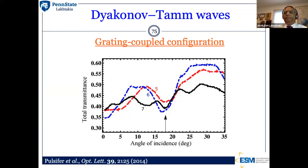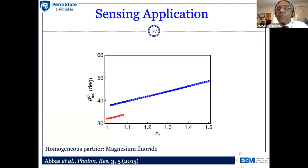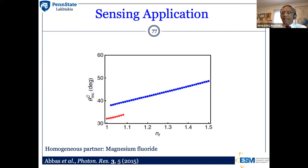Can we use Dyakonov-Tamm waves for sensing? We did not conduct an experiment for that, but we did a theoretical study. It turns out that the angle at which the Dyakonov-Tamm wave is excited changes as a function of NL — the refractive index of the infiltrant fluid — and that tells us that you can actually use this for sensing.